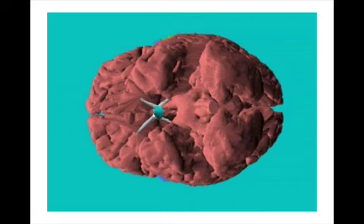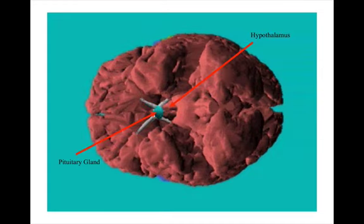And if we rotate the brain, underneath you can once again see the hypothalamus. But in this case, the pituitary gland that's controlled by the hypothalamus is also illustrated.